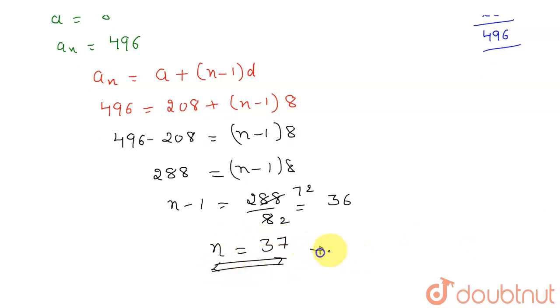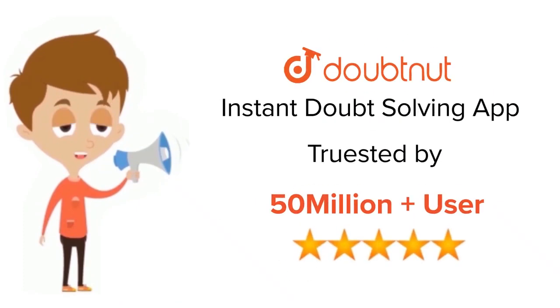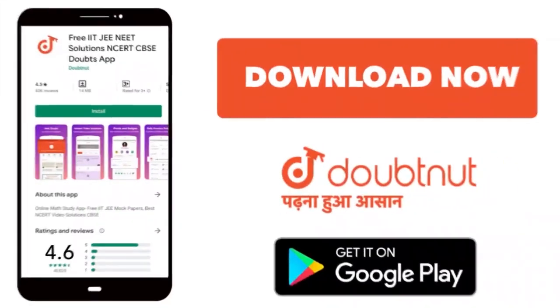So there are 37 number of terms which are divisible by 8 in between 200 to 500. So hope you understand the solution. Thank you. For class 6 to 12th, IIT-JEE, and NEET level, trusted by more than 5 crore students, download Doubtnet app today.